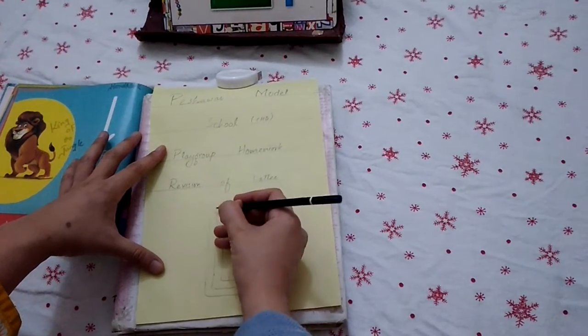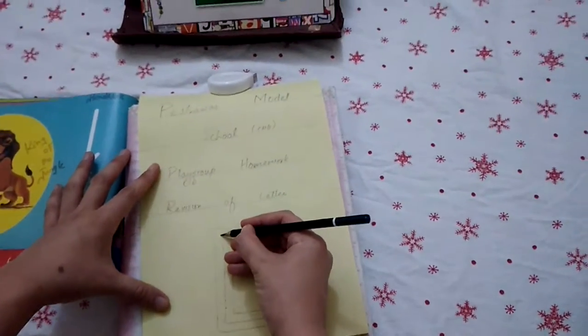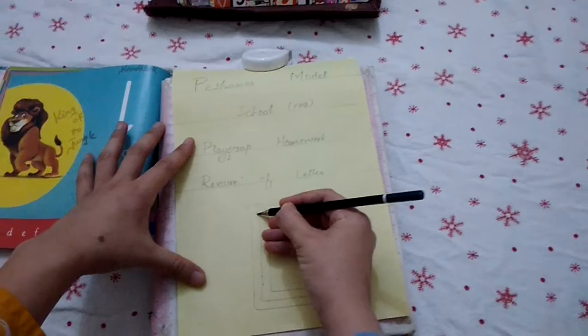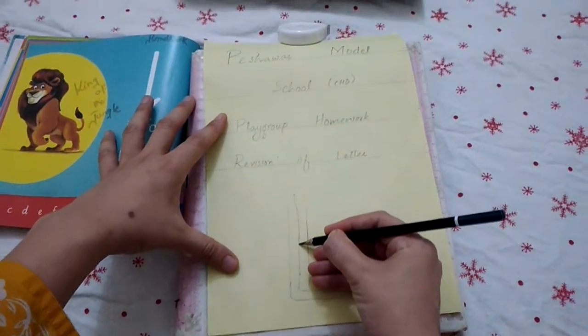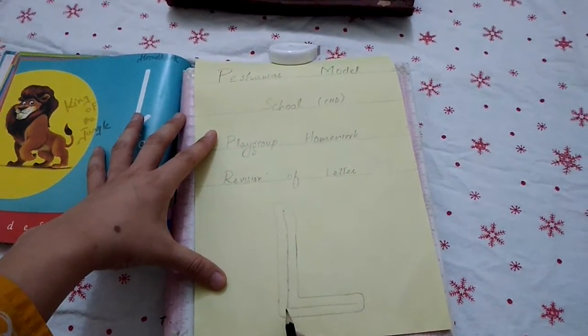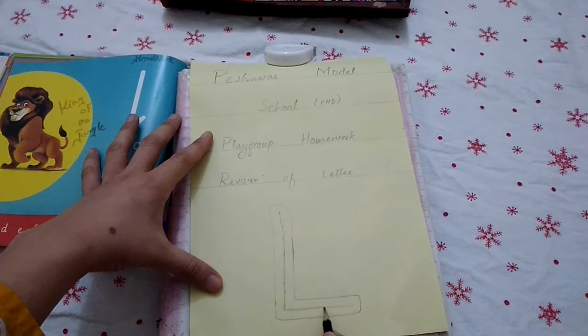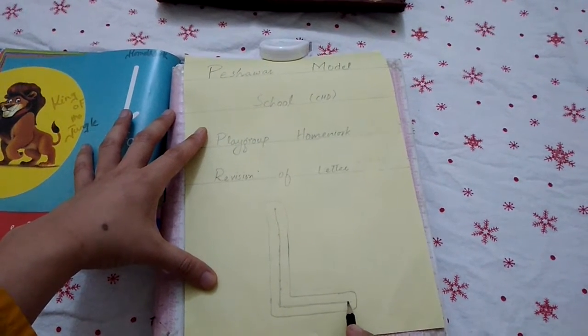So we will trace letter L from here. We will start from here. Come down and down, and stop. Go straight and straight, and stop.